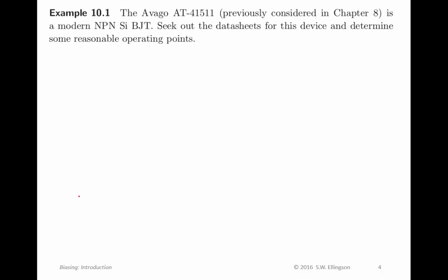Just to give you some feeling for how this works, here's two examples. First, the Avago AT41511 which I just mentioned. That's an NPN silicon BJT. In this example, I ask you to check out the data sheets for this device, commonly available on the internet. You should go ahead and pull those from the internet and take a look at them. Very educational experience. And in this example, I'm asking you to determine some reasonable operating points.